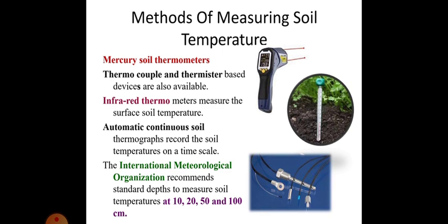There are some methods of measuring soil temperature. Mercury soil thermometers. Thermocouple and thermistor based devices are also available. Infrared thermometers measure the surface soil temperature. Automatic continuous soil thermographs record the soil temperatures on a time scale. And the International Meteorological Organization recommends standard depths to measure soil temperatures at 10, 20, 50 and 100 cm. These all are shown in the figure.